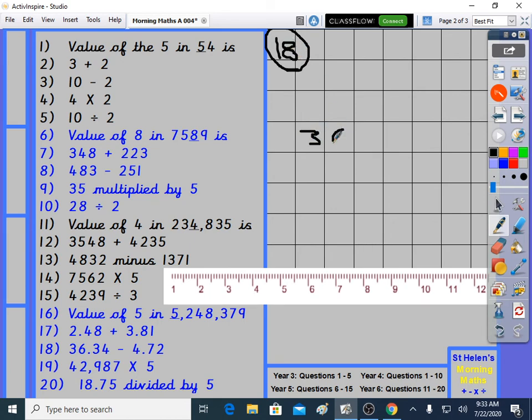Question 18. 36.34 minus 4.72. 4 take away 2. That's fine. 2. 3 take away 7 we can't do. So borrow from the 6. Goes down to a 5. 13 take away 7 is 6. 5 take away 4 is 1. 3 at the front. So many people forget the decimal point. Minus makes things smaller. 36 and a bit take away 4 and a bit went down to 31 and a bit.